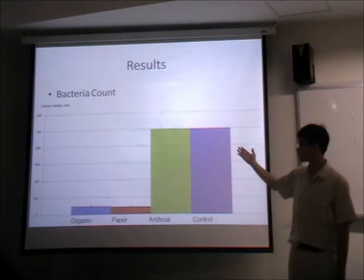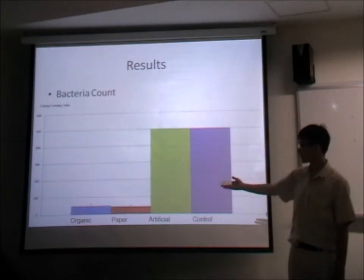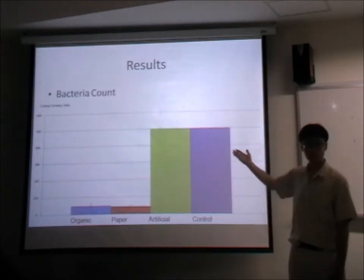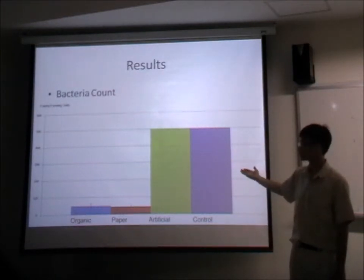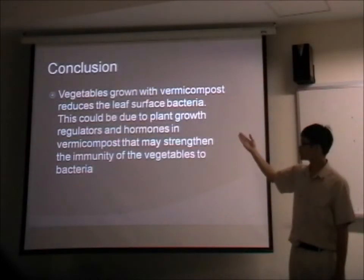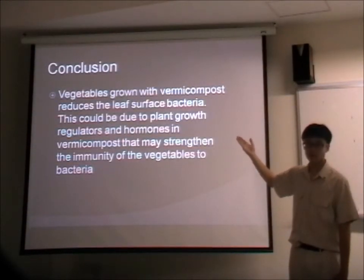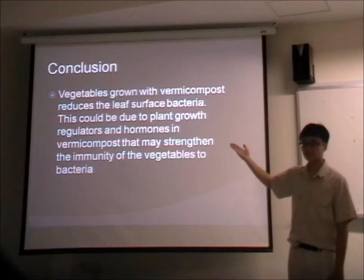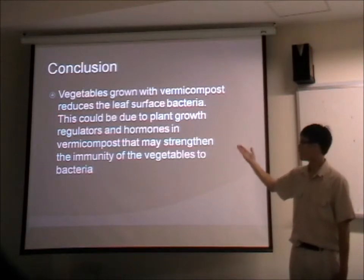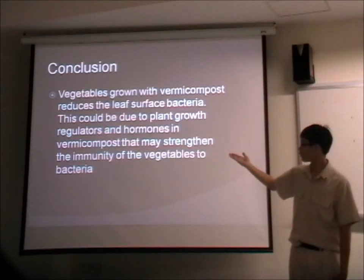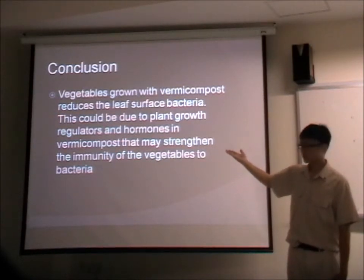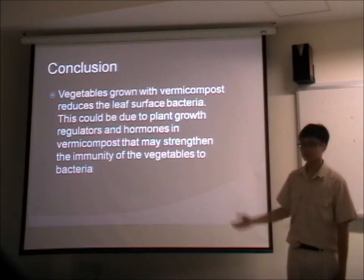For the bacteria count results, the organic and paper setups show very little surface bacteria compared to the artificial fertilizer and control setups. This shows that vegetables grown with vermicompost have reduced surface bacteria, probably due to plant growth regulators and hormones that may strengthen the immunity of the plants.